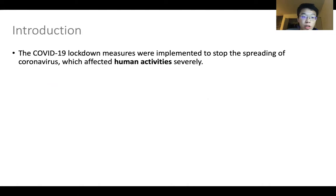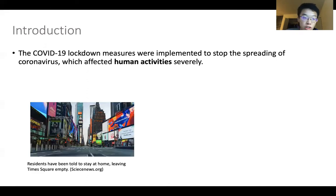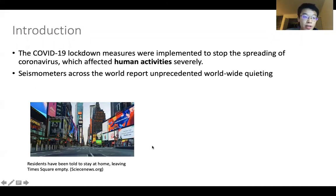The COVID-19 lockdown measures were implemented to stop the spreading of coronavirus, which affected human activities. For example, this figure shows that Times Square almost got empty during the lockdown measures, and seismometers across the world reported this worldwide quarantine.